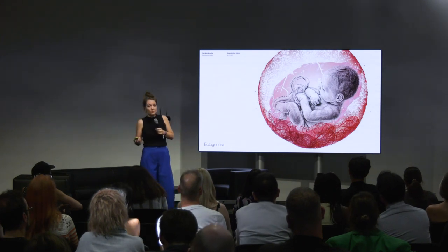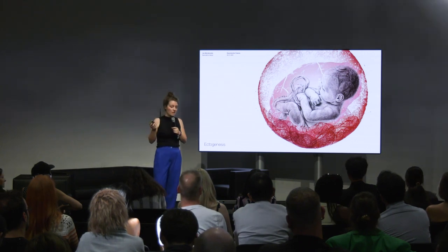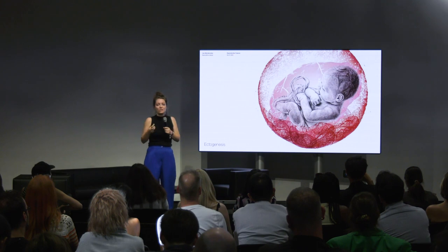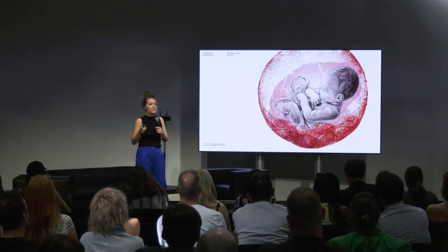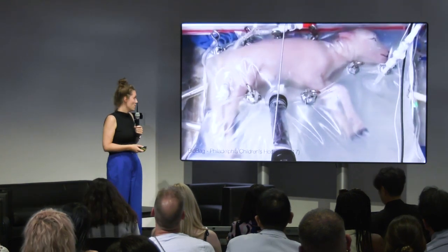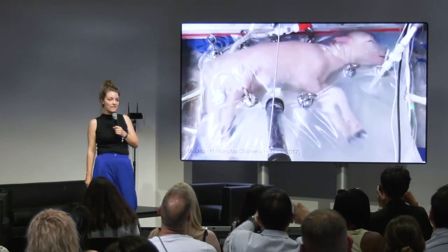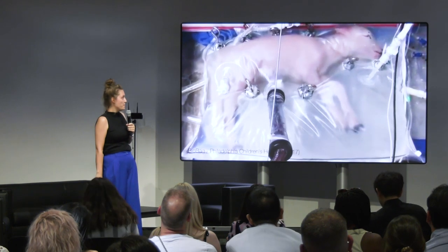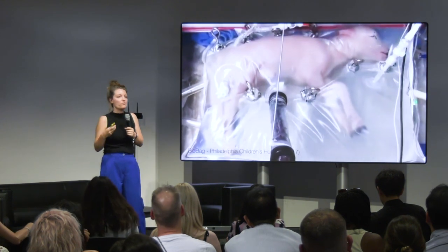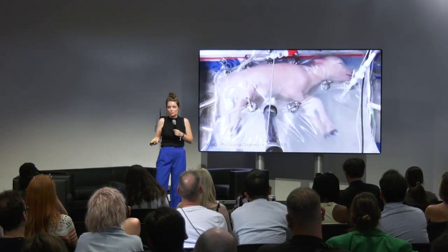Moving on to the future of reproduction — in discussions about our reproductive futures, artificial wombs are becoming more and more part of the conversation. Artificial womb technology, also known as ectogenesis technology, allows for fetuses to grow outside of the human body. The first working artificial womb was made by the Philadelphia Children's Hospital in 2017. It shows a sheep at the equivalent of 22 to 24 weeks of human gestation, and this is where the technology is heading — to increase the survival rate of extremely prematurely born babies.